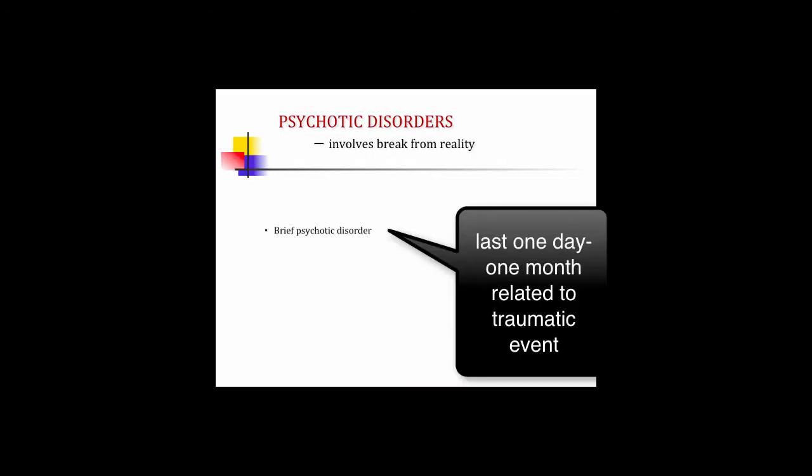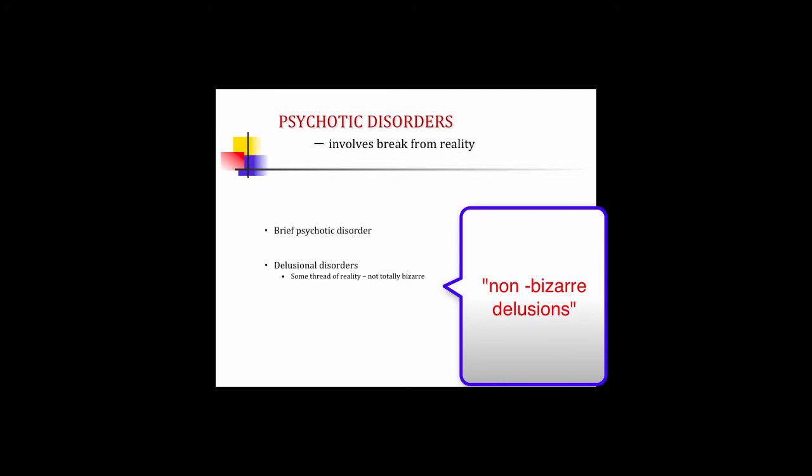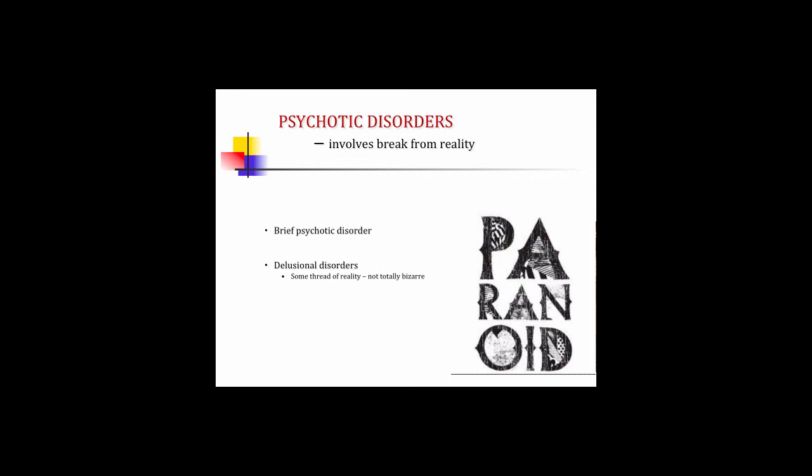Psychotic disorders involve a total break from reality — a disorder in which the personality is seriously disorganized and the person's contact with reality is impaired. Brief psychotic disorders usually last one day to one month and are associated with a traumatic event; the mind may be protecting itself by causing this break. Delusional disorders involve non-bizarre delusions — a belief that something is occurring that is not out of the realm of possibility, like a partner cheating or being poisoned or followed. These individuals continue to socialize and function normally apart from the delusion.